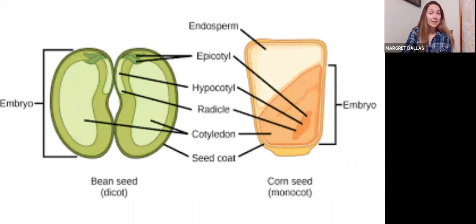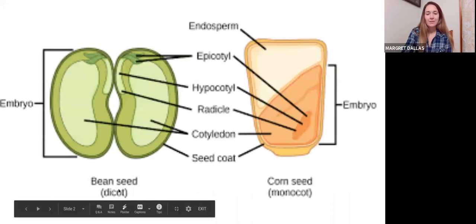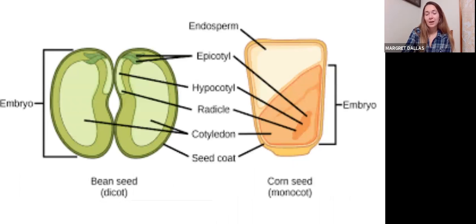You might want to take some notes during this time — this will help you on your quiz later, but please don't feel like you have to write everything down. Here's an example of a dicot and a monocot. We're going to see these later, and this will also help you with your seed dissection lab. If you have any questions about that, you know how to email me.